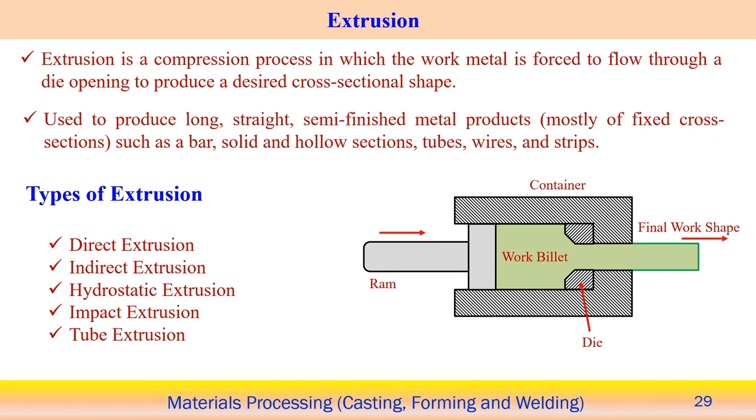Hello everybody. Now I will discuss about the different types of metal forming operations. One of these is the extrusion process. Extrusion process is basically a compression process — we apply the load on the work piece billet and the material comes out through the die opening.